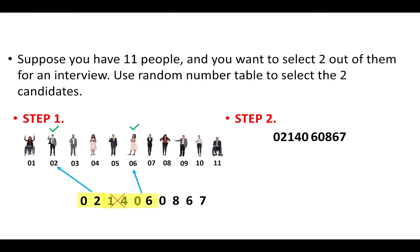Thus we have selected 2 candidates randomly from a population of 11 people. This is how we use the random number table. I hope the process of selecting random numbers from a random number table is now clear. That's all for today. In the next lecture, we will see frequency distribution. Thank you.